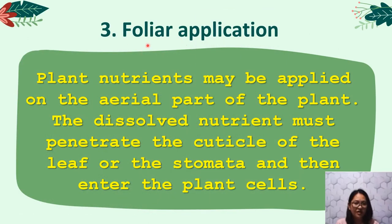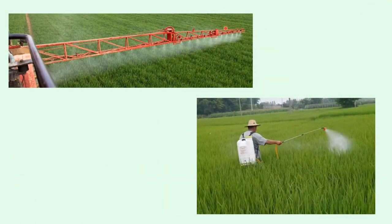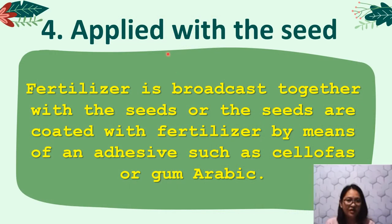Number three, we have foliar application. Plant nutrients may be applied on the aerial part of the plant. The dissolved nutrient must penetrate the cuticle of the leaf or the stomata and then enter the plant's cells. This illustrates the foliar application method; it is usually employed only in applying micronutrients. Number four, we have applied with the seed. Fertilizer is broadcast together with the seeds, or the seeds are coated with fertilizer by means of an adhesive such as cellophane or gum arabic.